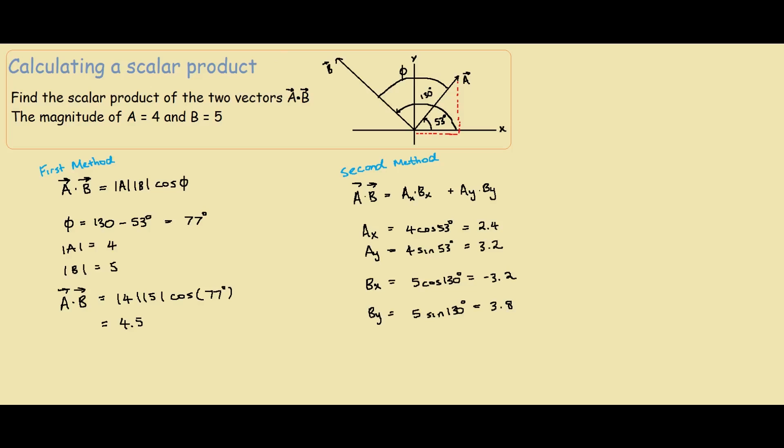You may be wondering why Bx is negative in this case. If we go to our Bx, Bx is pointing in the opposite direction, and this is where the negative x occurs. By is positive because we're still going above. If the vector was like this, the x would be negative and the y would be negative.